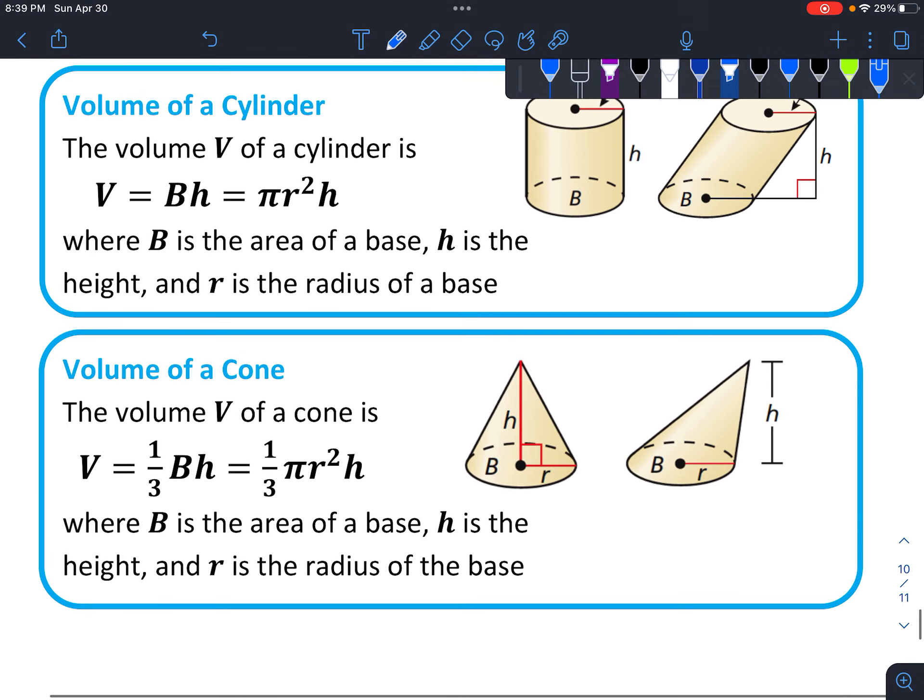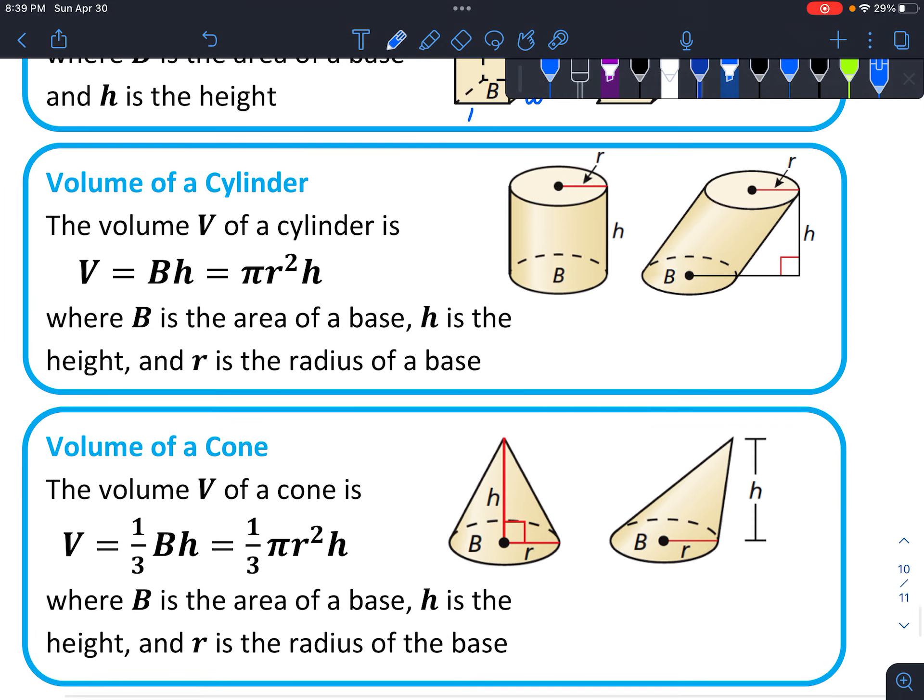The volume of the cylinder is based on the idea that you've got a round base. So if you're given the radius, you could say pi r squared. It's giving you the area of the base, but then you have to multiply by the height as well, because that would give you the total volume.